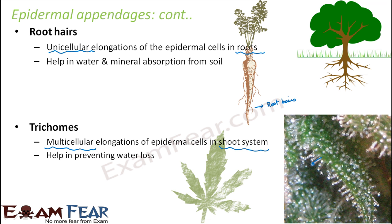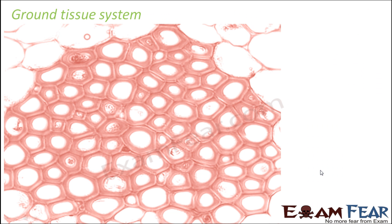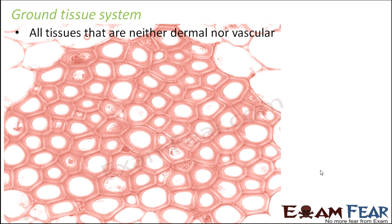With this we have reached the end of the epidermal tissue system. Now we will talk about the next tissue system — the ground tissue system. All the tissues except the epidermal tissues and the vascular tissues fall under this category. What is left over? Nothing but the simple permanent tissues: parenchyma, colenchyma, and sclerenchyma. All these tissues are part of the ground tissue system.